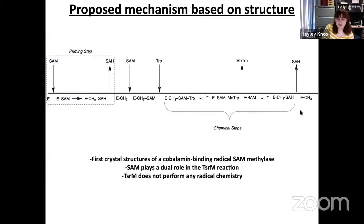In summary, I've talked about the first crystal structures of a cobalamin-binding radical SAM methylase. I've also discussed how SAM plays a dual role in the TSRM reaction — as both the source of the methyl group and as a base that primes the substrate. Finally, I've shown that despite being annotated as a radical SAM enzyme, TSRM does not actually perform any radical chemistry and is simply masquerading as one. As we move forward, we're looking into these cofactor interactions — the glutamate that binds to the cluster and the arginine on the bottom axial face — and how they affect reactivity.